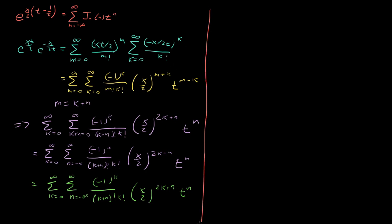The sum over k is exactly equal to our series definition for Bessel functions. So we see at long last that the generating function is equal to the sum from n equals minus infinity to infinity of J sub n of x times t^n.